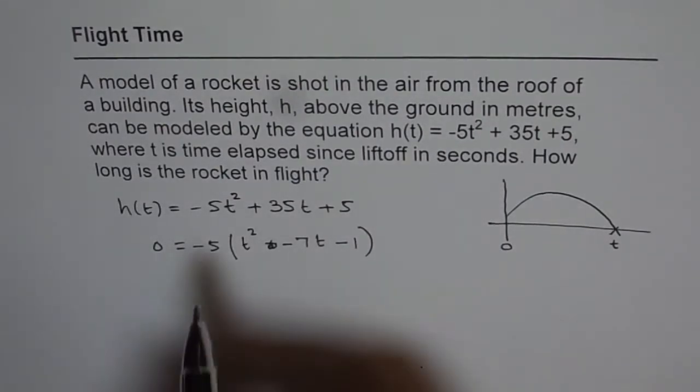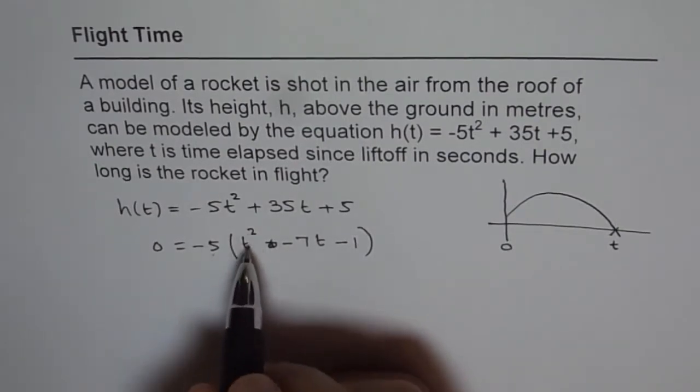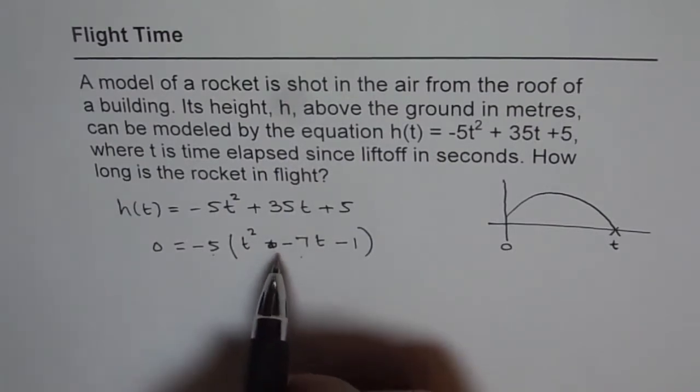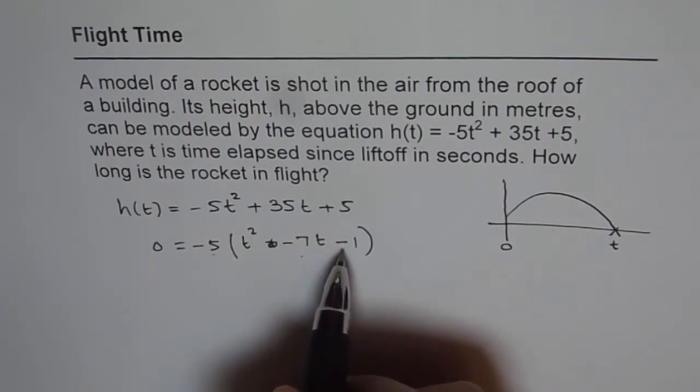Now in this case, this equation can be zero only if -5 is zero or this term is zero, right? It is a product of two terms. As you know, -5 cannot be zero. So t² - 7t - 1 should be zero.